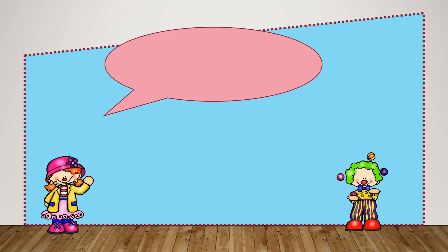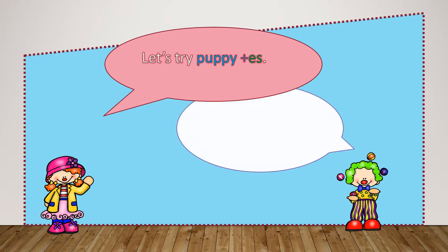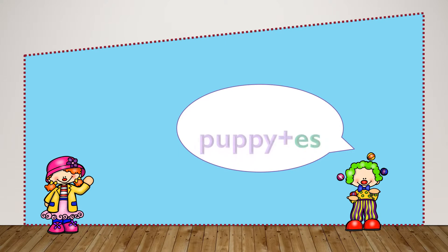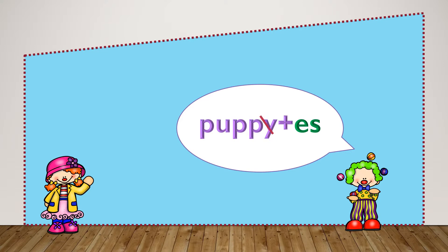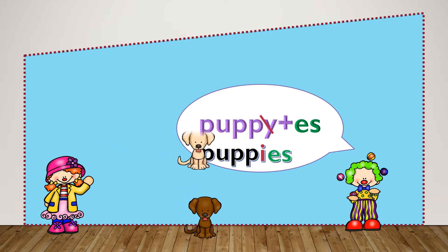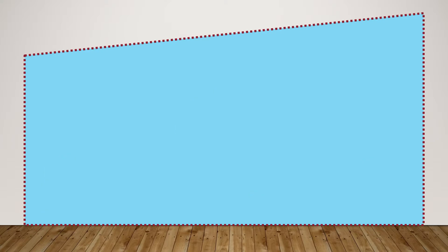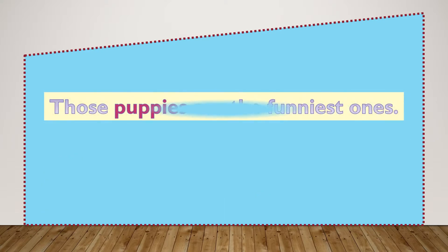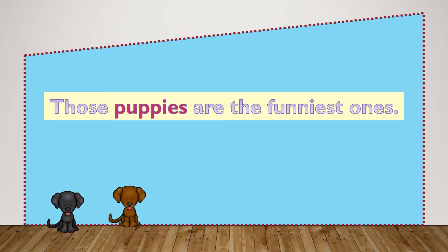Let's practice with the base word puppy and we're going to add the suffix -es to make it plural. Here there's no double I and there's no vowel team, so I'll change the Y to I and add the -es. Now I have the plural word puppies. Those puppies are the funniest ones.